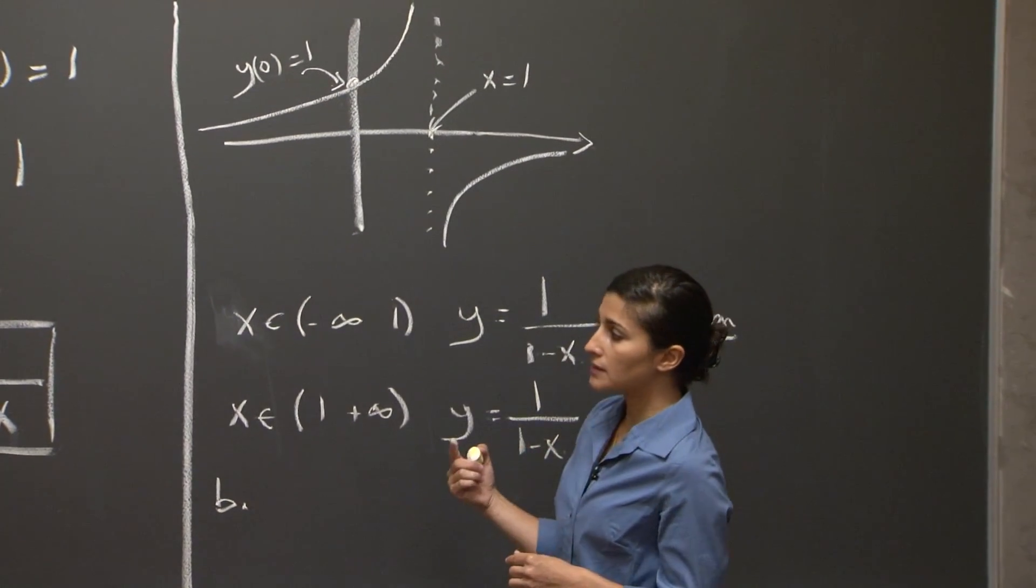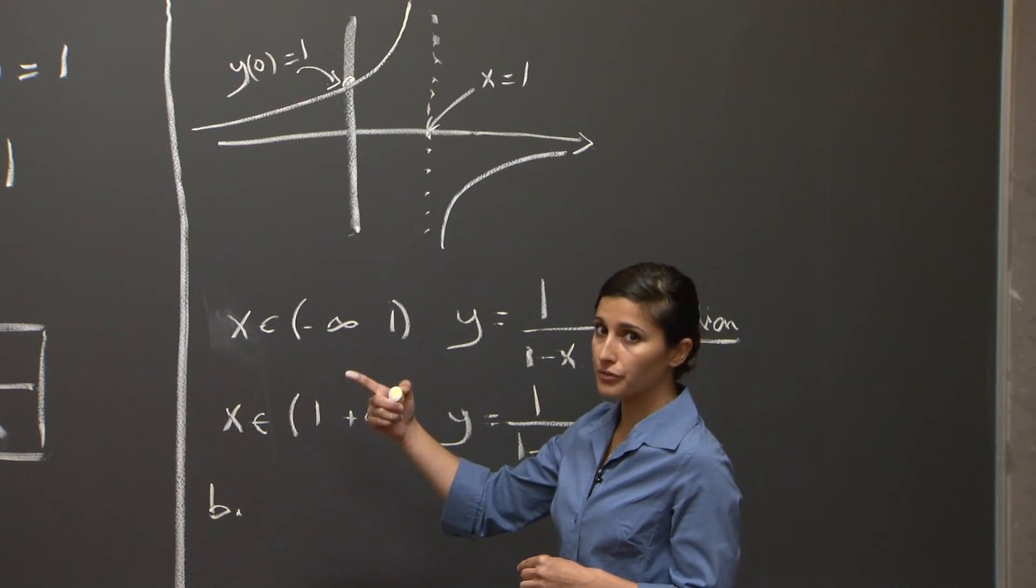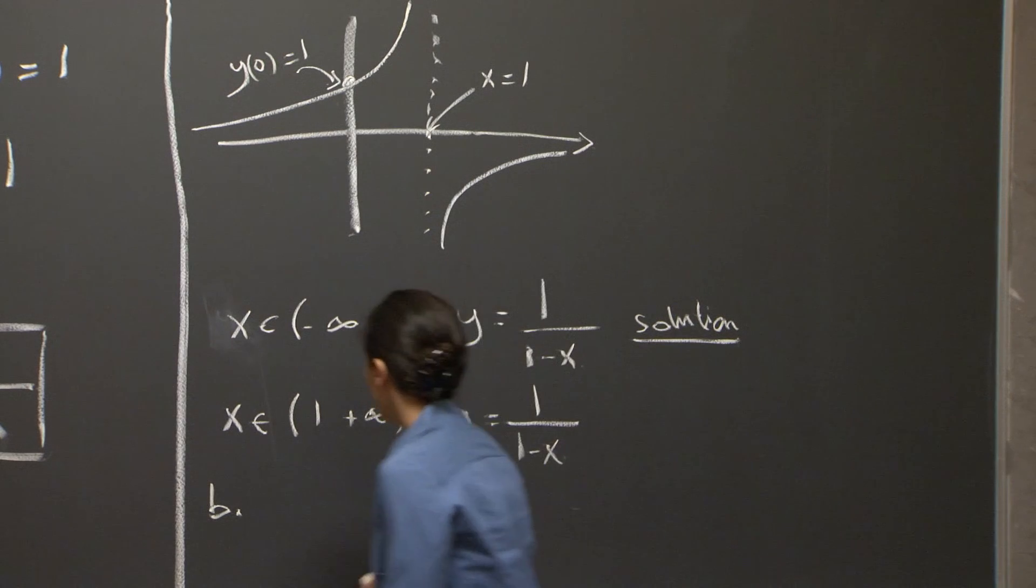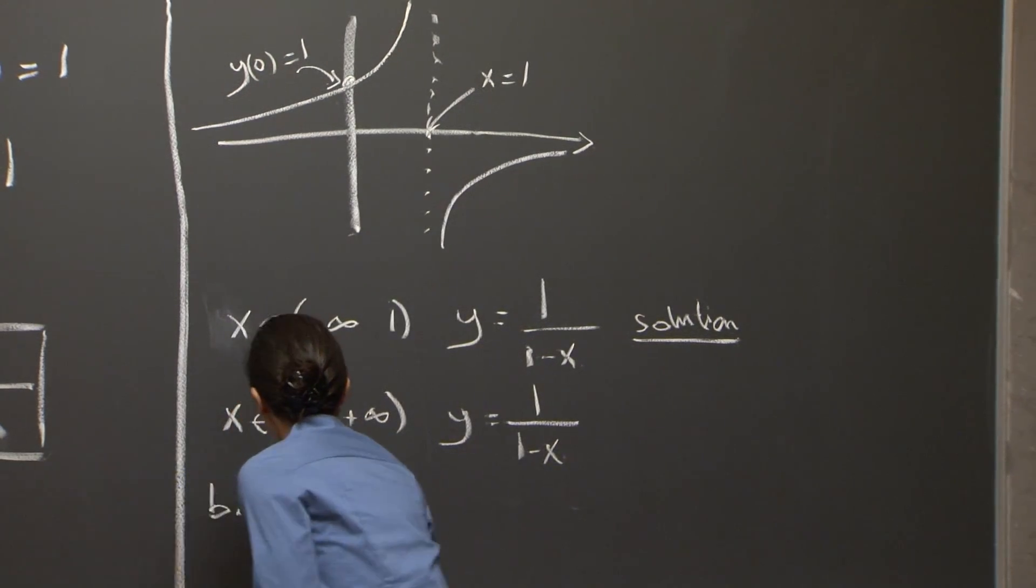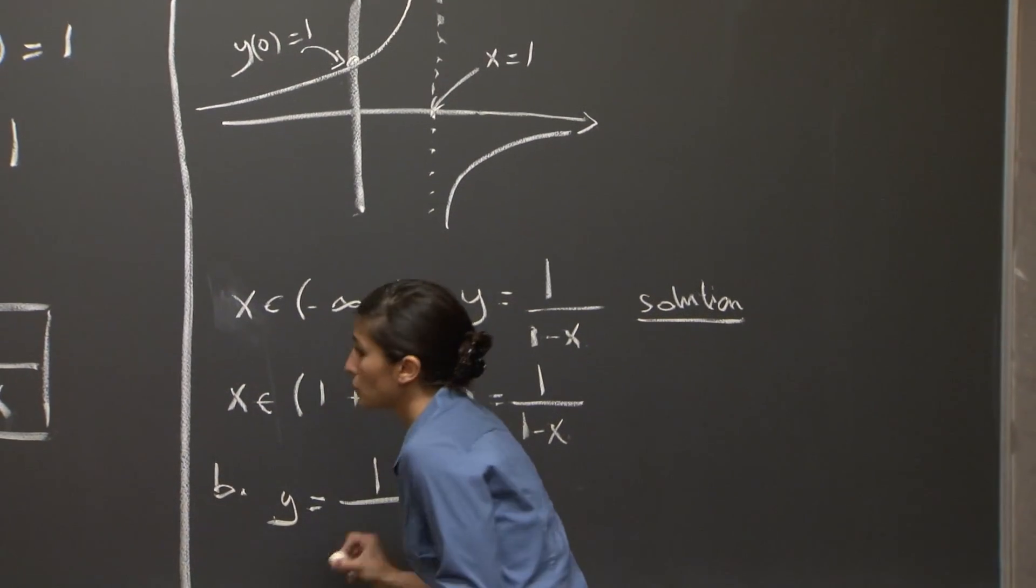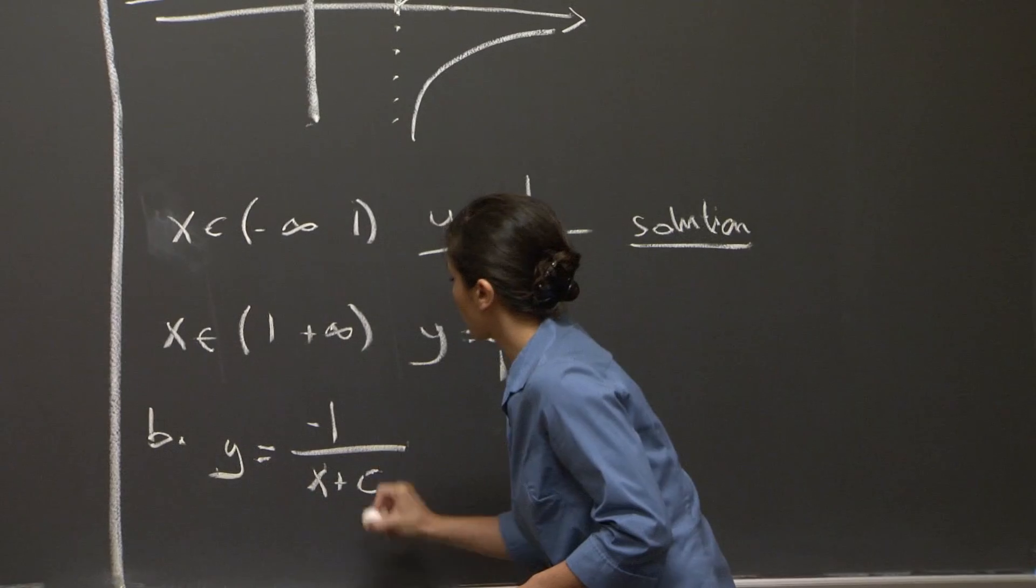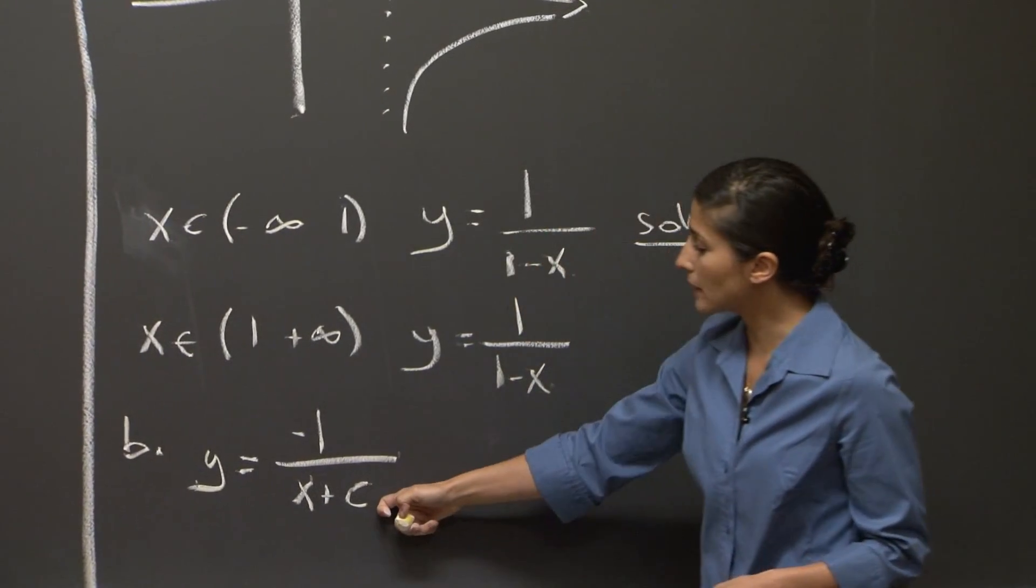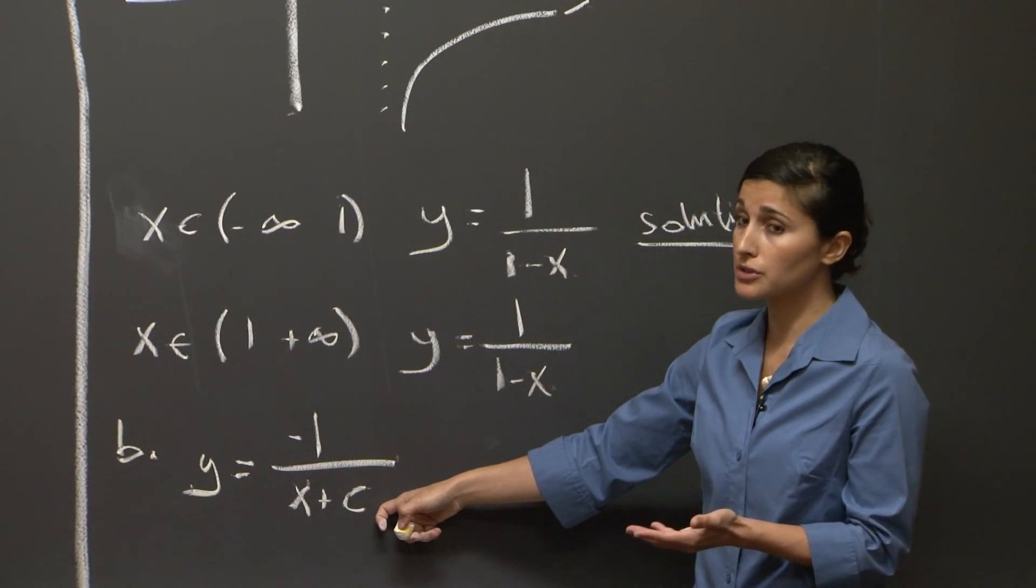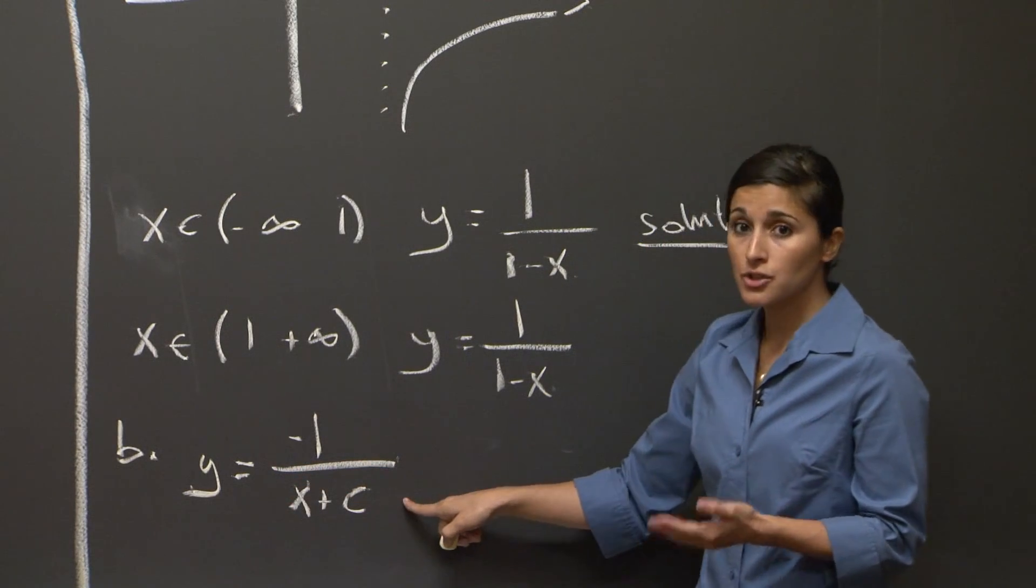We already answered this partially during the solution of part A, where we solved using indefinite integrals, and arrived at the solution minus 1 over x plus c, where here we had basically an undetermined constant of integration. So this is one general solution.